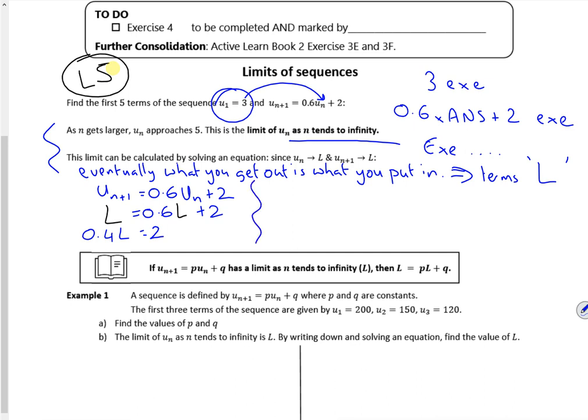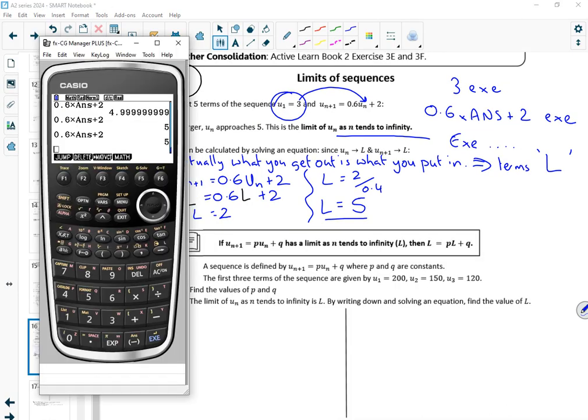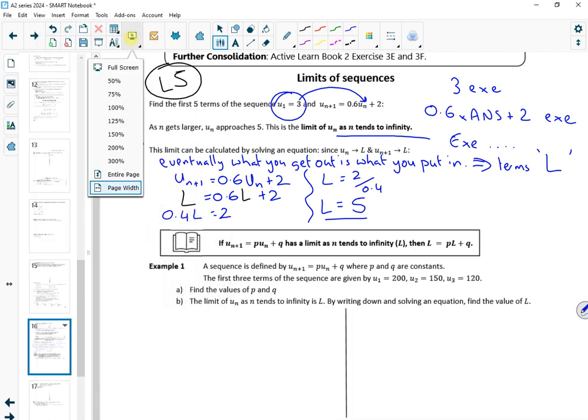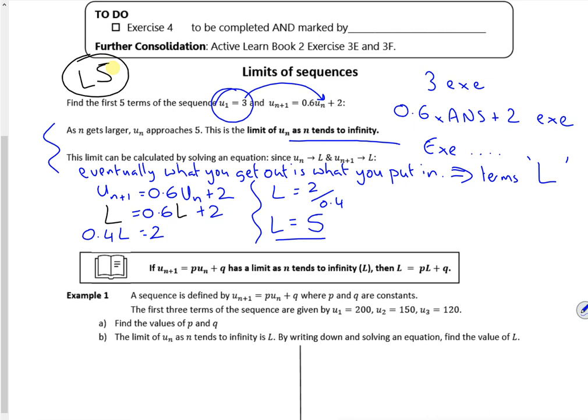And then if I just divide by the 0.4, which is dividing by 2 fifths, the 2's cancel out and I'm just left with 5. So what I had on my calculator, miraculously, is the same as what I've got algebraically.